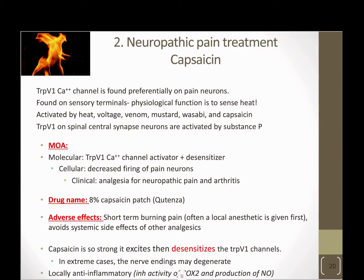So let's talk about capsaicin. Capsaicin is the ligand for TRPV1 receptors. TRPV1 receptors are naturally activated by heat and by substance P released in our body, and they're activated by the ligand capsaicin. TRPV1 receptors are really only found on pain neurons. Because these are primarily on heat-sensing neurons, when these receptors get activated, it activates that heat neuron and sends a signal up to your brain that says that's hot. That's how you sense heat.